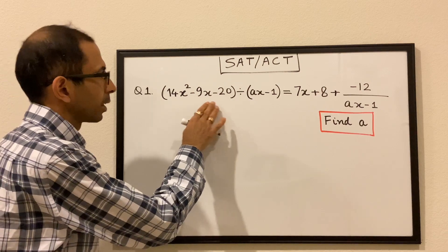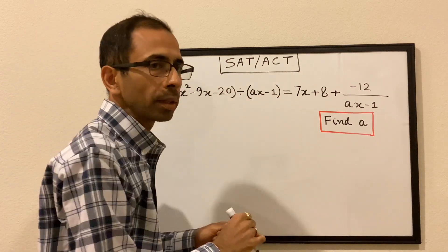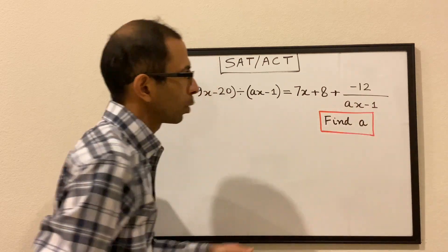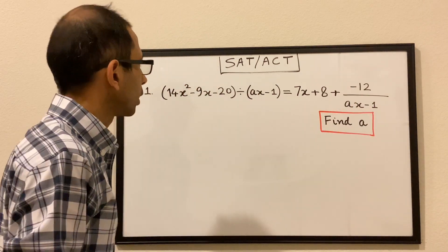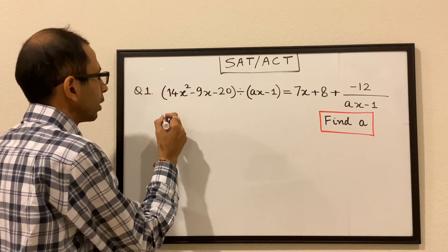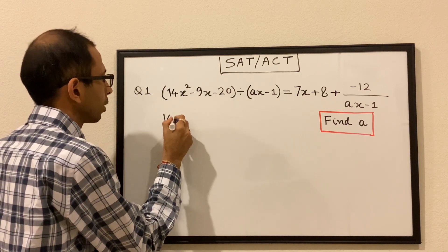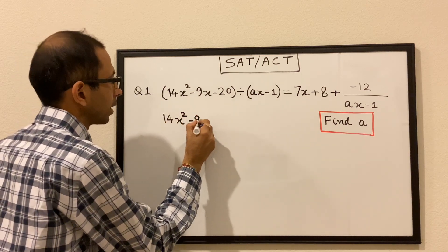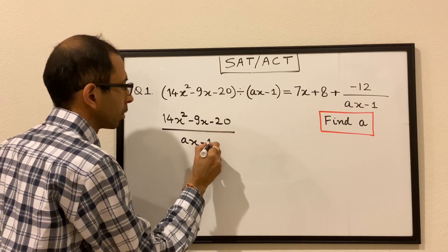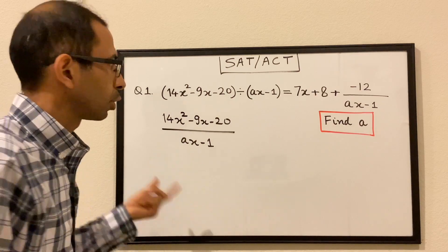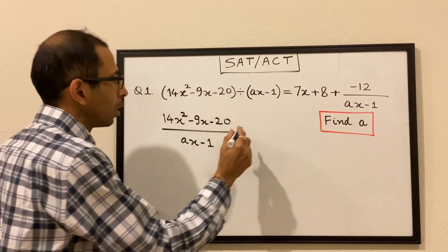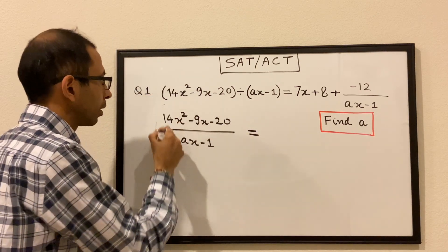We have 14x² minus 9x minus 20 divided by ax minus 1, equal to 7x plus 8 plus negative 12 over ax minus 1, and we have to find the value of a. To begin with, we can write the left side as 14x² minus 9x minus 20 divided by ax minus 1 — it's the same thing, just written in this form. This is equal to the right side, and on the left side we have a single fraction.